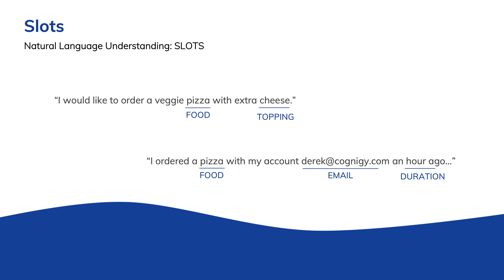This is important, because the NLU may know that the user wants to order something, but it needs to figure out what specifically the user wants — a pizza with extra cheese. Some slot types will be domain-specific, like pizza and all the possible toppings it could have. Other slots are more conceptual or pattern-based, like dates, emails, durations, or temperatures.